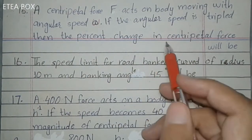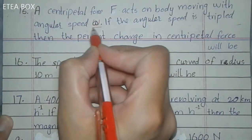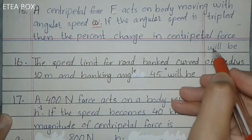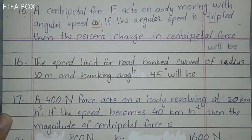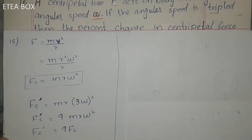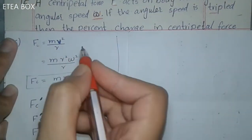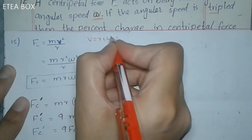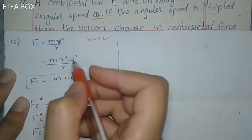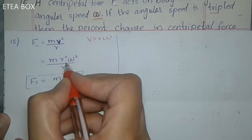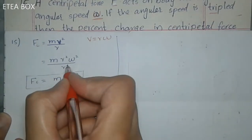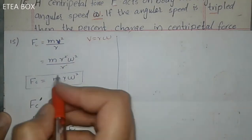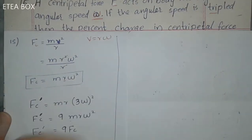When a body is moving with angular speed omega, the centripetal force is F. We know that centripetal force equals mv² / r, and v = rω. Substituting v², we get r²ω², and canceling one r, we get centripetal force equal to mrω². This is the standard basic equation.